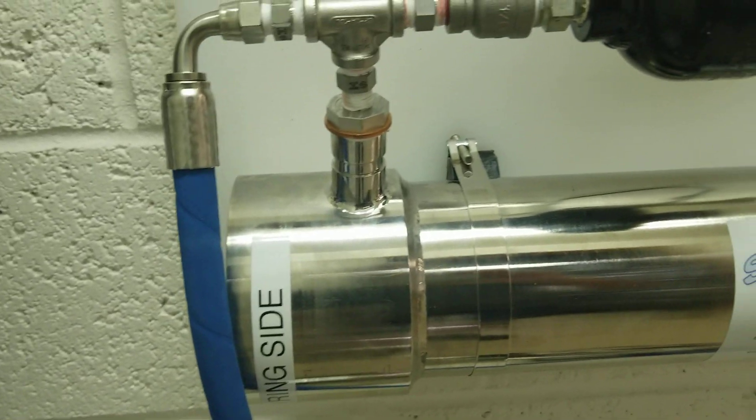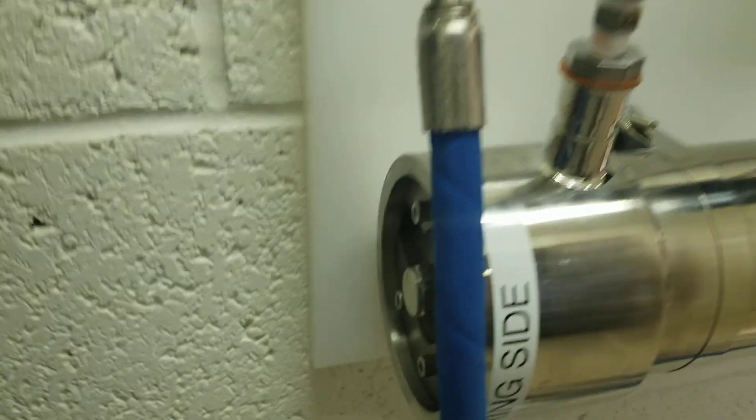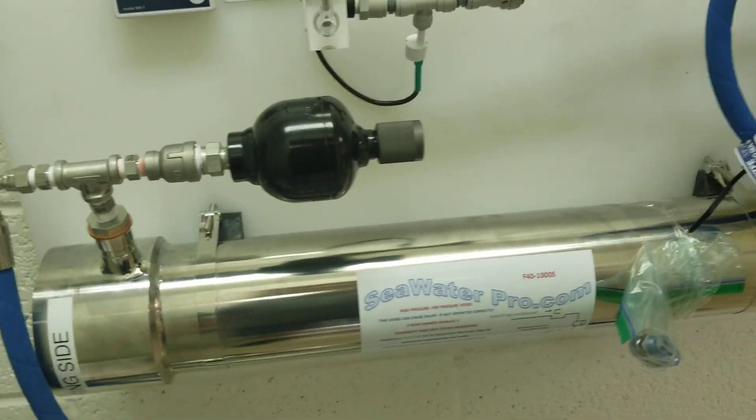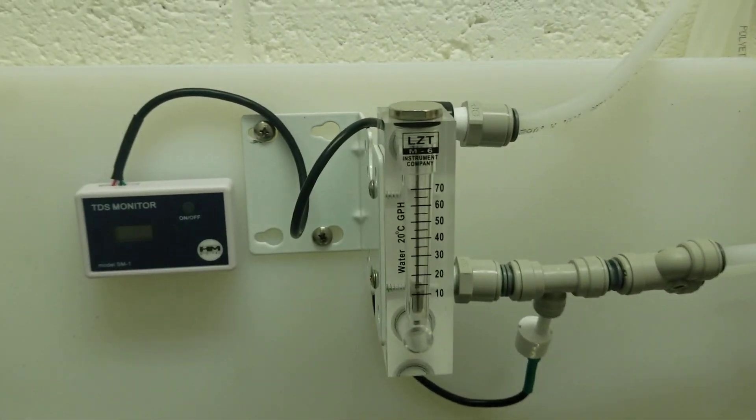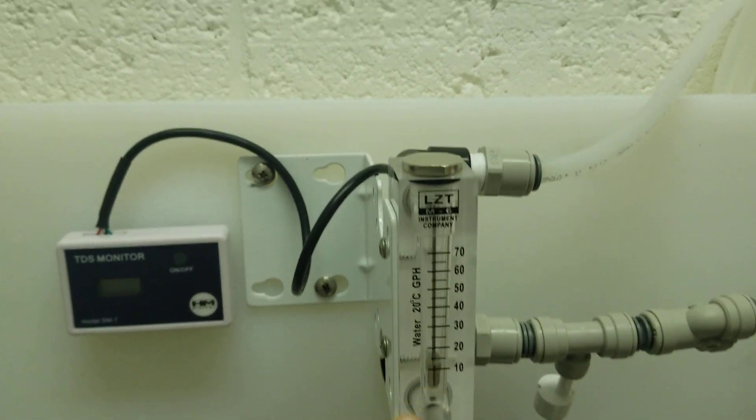This system comes with two 4 inch diameter by 21 inch long membranes. The system again makes 70 gallons, 60 to 70 gallons per hour depending on water temperature.